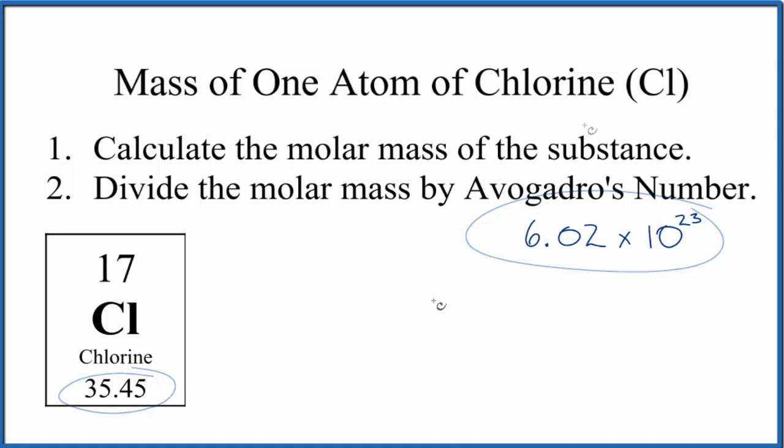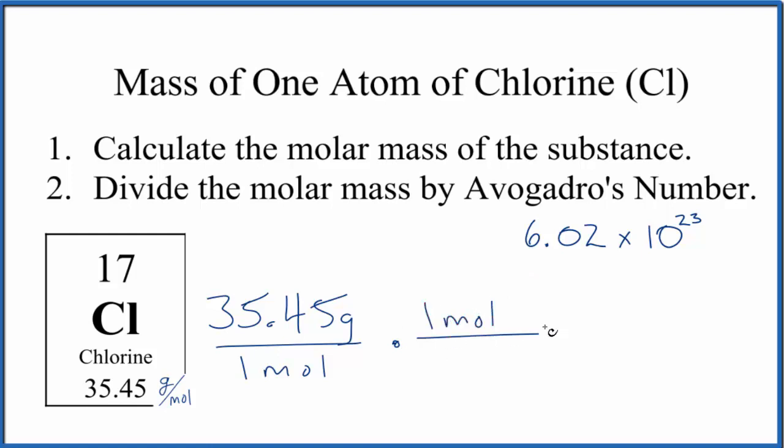This will be an average chlorine atom. You can think of this average atomic mass here as having the units of grams per mole. So we have 35.45 grams in one mole of chlorine. We're going to use a conversion factor here because we know that one mole of any substance is Avogadro's number.